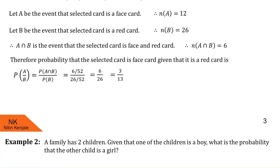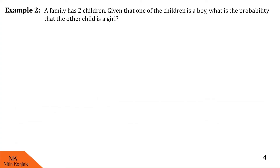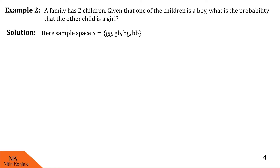Now let us proceed to the next example. A family has two children. Given that one of the children is a boy, we are asked to find the probability that the other child is a girl. The sample space lists all possible combinations: both girls, both boys, first girl and second boy, or first boy and second girl. These are the only possibilities for a two-children family, so N of S is 4.